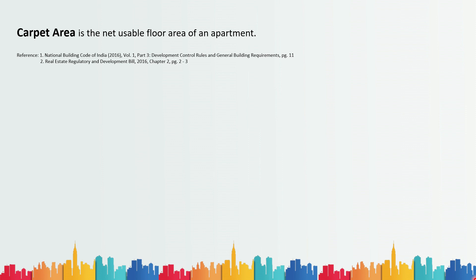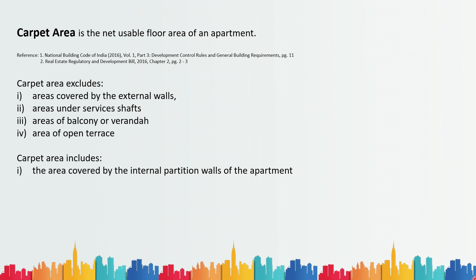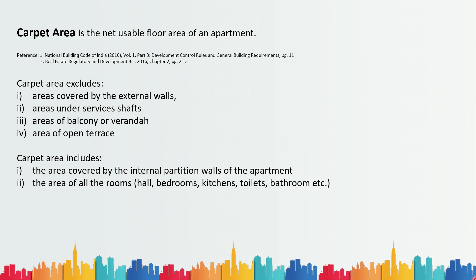Carpet area is always calculated for one apartment, not the entire floor. Carpet area excludes: areas covered by external walls, areas under service shafts, areas of balcony or veranda, and areas of open terrace. Carpet area includes: area covered by the internal partition walls of the apartment, and the area of all rooms — hall, bedroom, kitchen, toilet, bathroom, dining room, and so on.